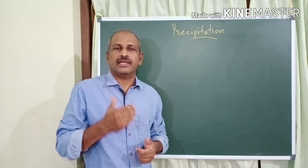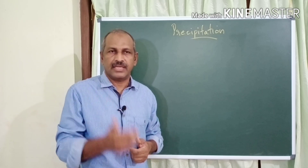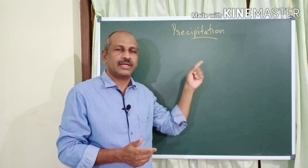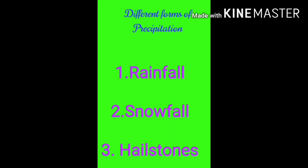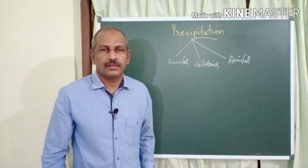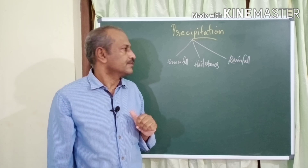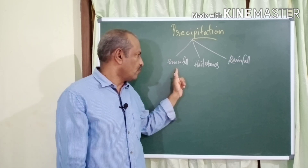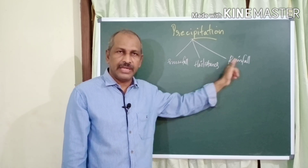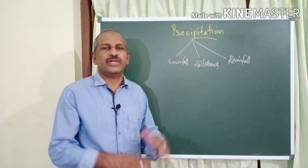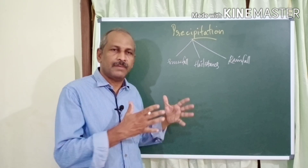Precipitation occurs in different forms or types. What are the different types of precipitation? They are given on a chart. There are different forms of precipitation: rainfall, snowfall, and hailstones.